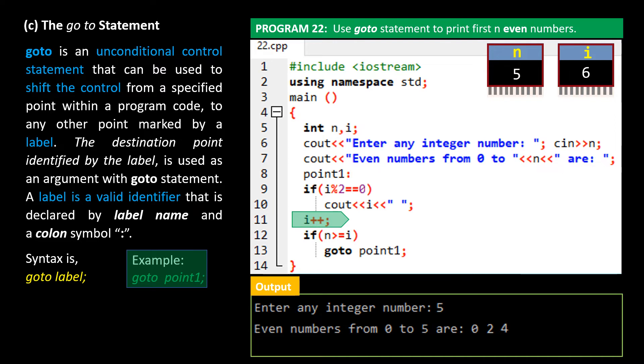Now it's checked if n is greater than or equal to i. n is 5 and i is 6. That means n is neither greater than or equal to i, and so control doesn't execute this if block. It goes to next line, which is the end of program. We now have printed on the screen all even numbers from 0 to 5.